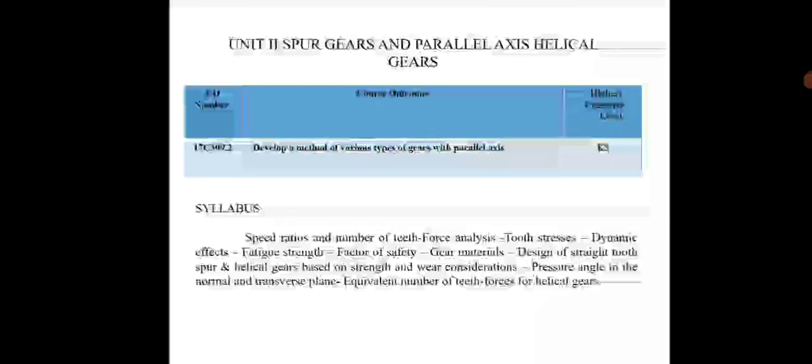We are going to discuss unit 2: spur gears and parallel axis helical gears. The course outcome number is 17C309.2. The course outcome is to develop a method of various types of gears with parallel axes. For this, the highest cognitive level is K3, which is applying.